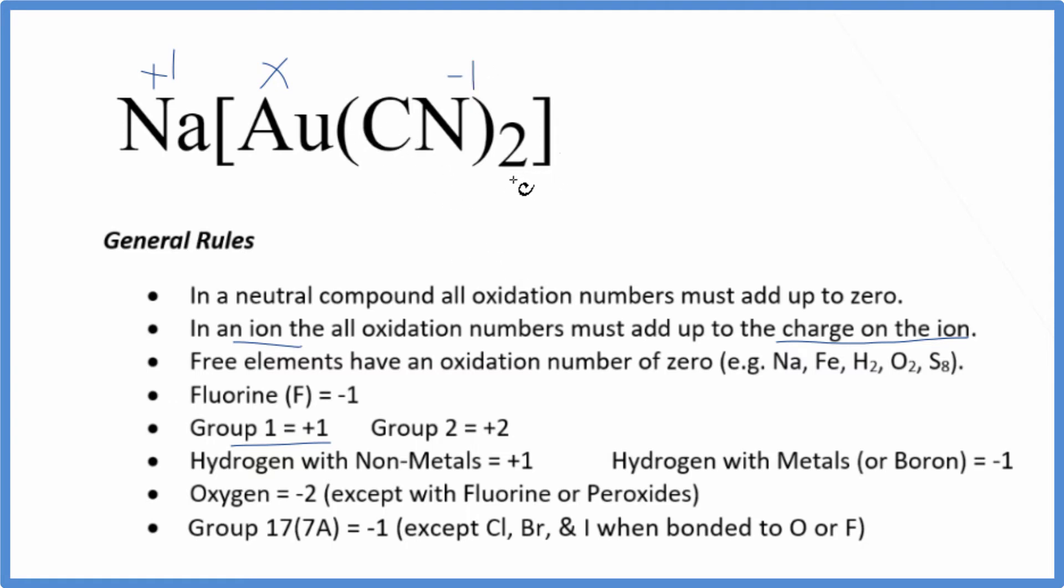Now, we could set an equation up because we know that all of this is going to equal zero. We could just say one plus the gold, that's X, two times minus one, that's minus two, that equals zero. X minus one equals zero, and then X equals plus one.